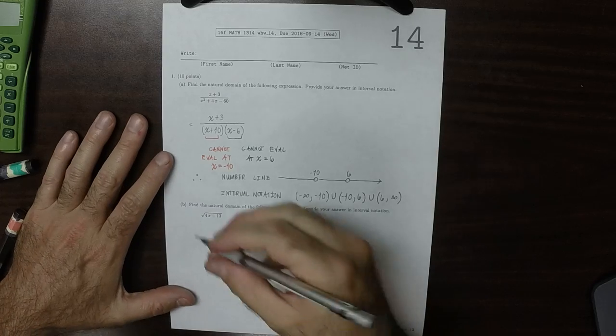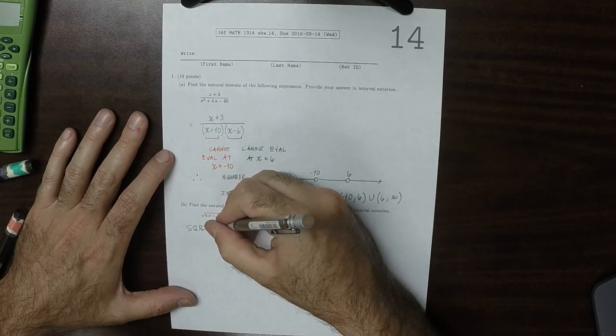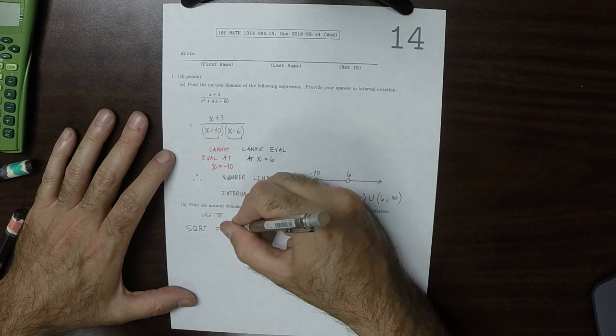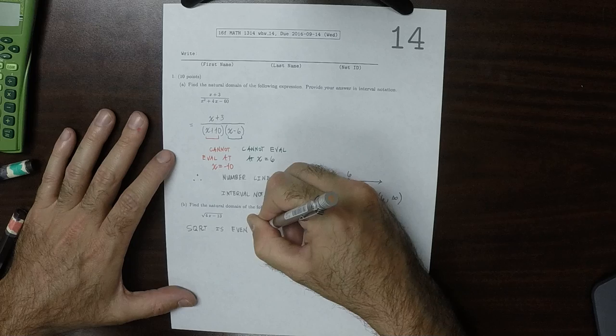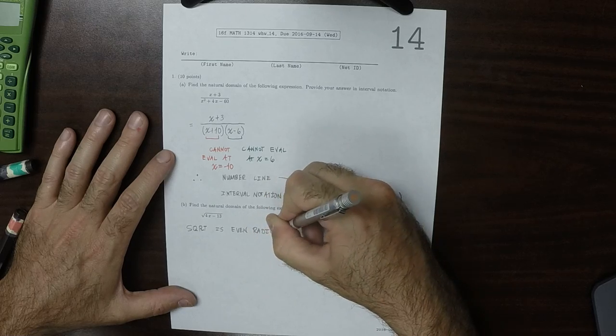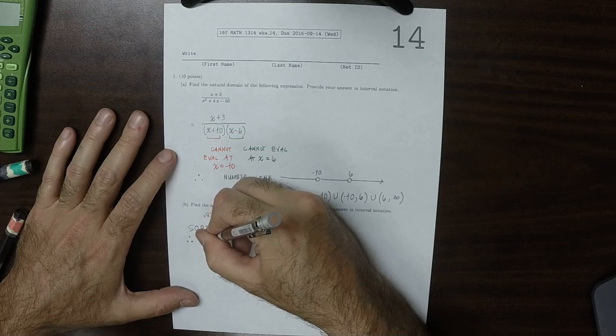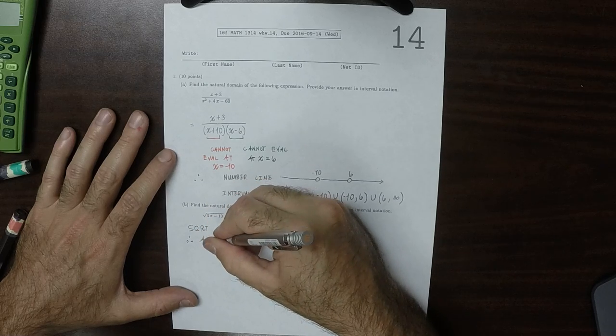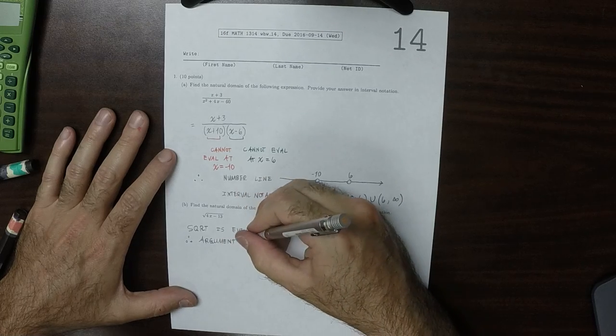For part b, square root is an even radical, and therefore the argument must be non-negative.